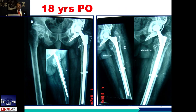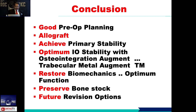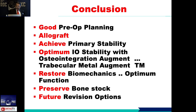In conclusion: good pre-operative planning is essential. You must have access to allograft — required for almost all cases — soak it in blood for better osteointegration. Achieve primary stability; check stability intraoperatively. Trabecular metal augments make for excellent long-standing reconstruction. Always think about future revision. Restore biomechanics, preserve bone stock, and always plan for the next revision.